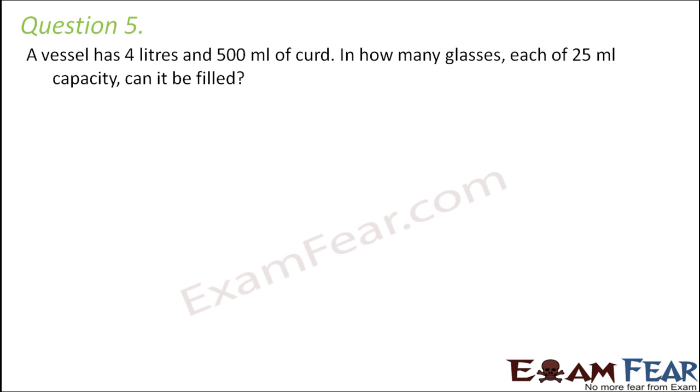Question number 5. A vessel has 4 liters and 500 milliliter of curd. In how many glasses, each of 25 ml capacity, can it be filled? So the total volume of curd that is there in the vessel is 4 liters, 500 milliliter. So let us first convert it into one unit. So let's say we convert it into milliliters. Now 1 liter is equal to 1000 milliliters. So if you want, you can recall it using the sequence of the units. So this would be 4000 plus 500 milliliter, which is equal to 4500 milliliters.